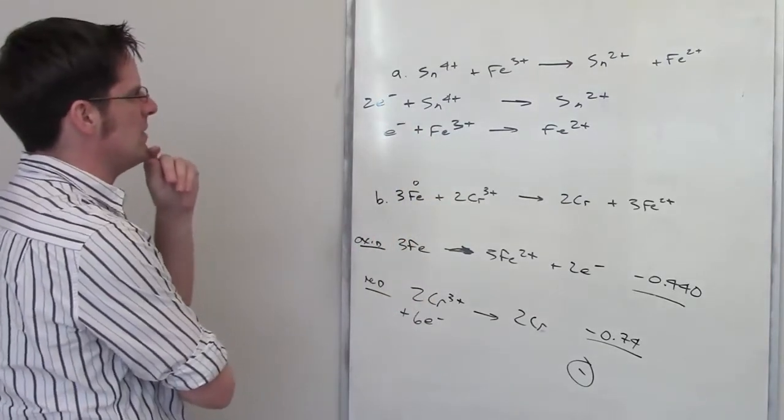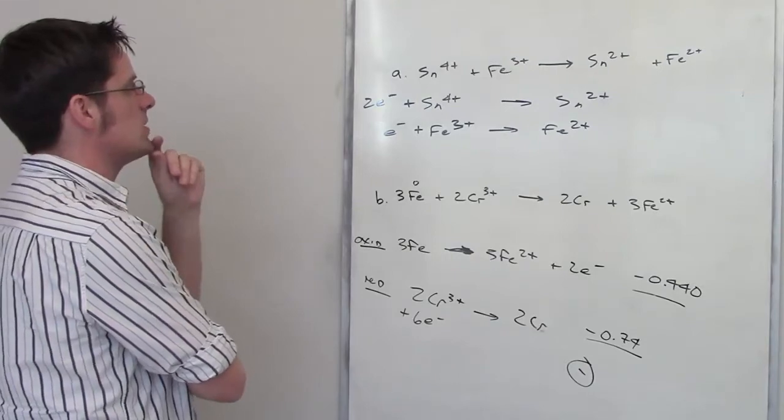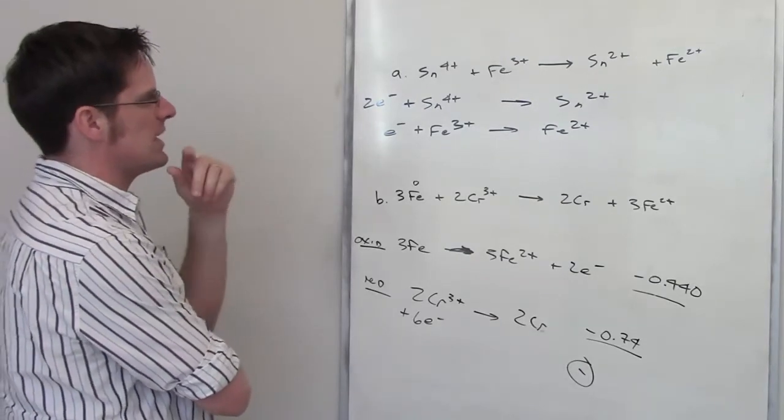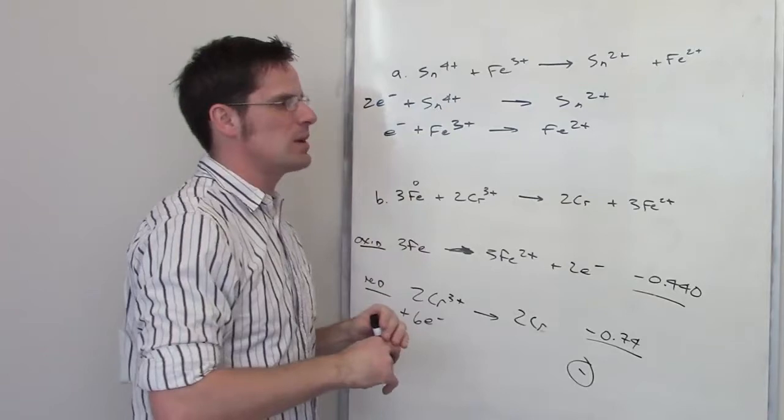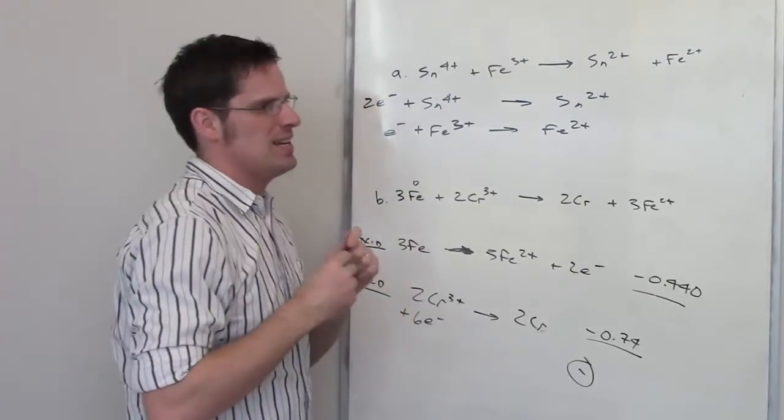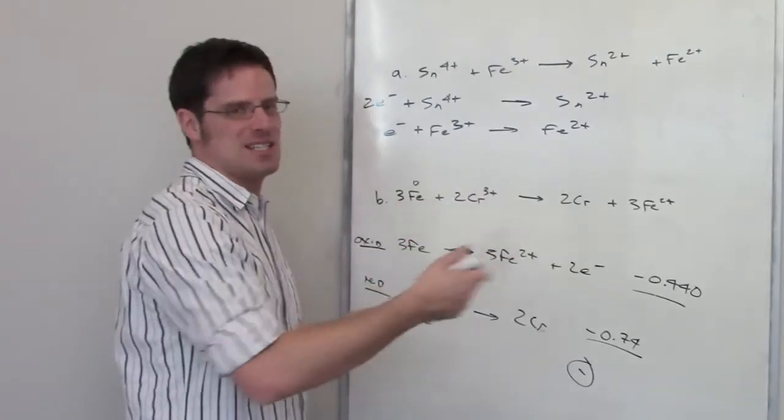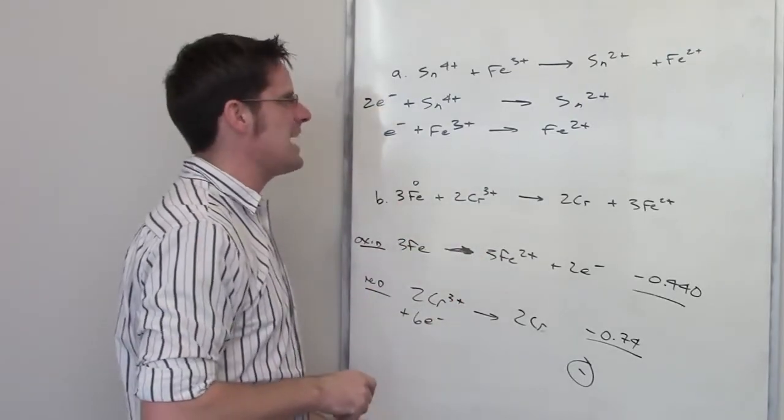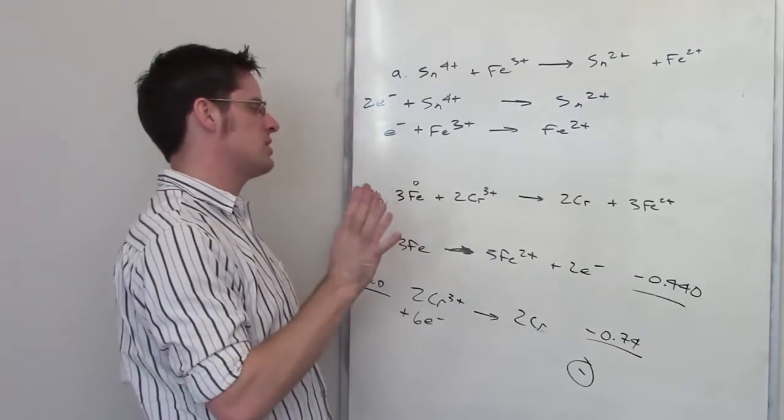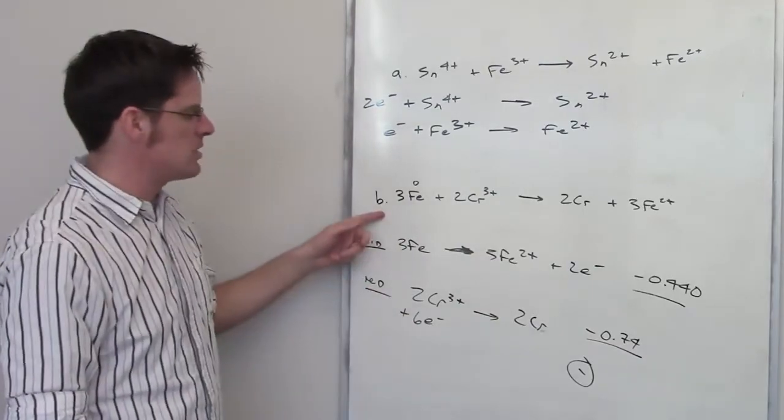So is this reaction even possible? The answer is no, it's not. Because in this particular reaction, both the tin four plus and the iron three plus are being reduced. That is impossible. Every time you have something get reduced, something else has to be oxidized. So option A is complete bogus not possible. Option B, as we've seen, is going to be non-spontaneous.